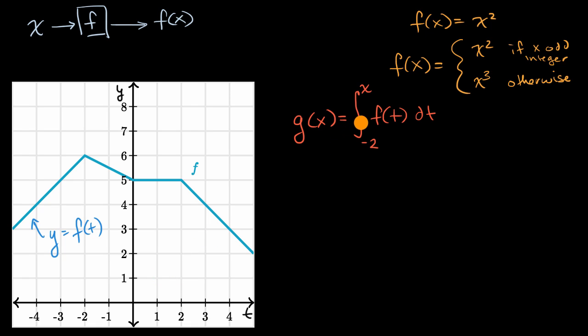Now, pause this video and really take a look at it. This might look really fancy, but what's happening here is, given an input x, g of x is going to be based on what the definite integral here would be for that x. And so we can set up a little table here to think about some potential values. So let's say x and let's say g of x right over here.